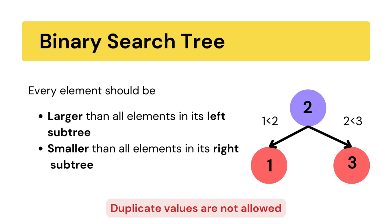Let us consider it with an example. This is a binary search tree where 2 is the head. In this BST, 1, which is the left subtree of 2, is smaller than it. And 3, which is the right subtree of 2, is greater than it. In BST, duplicate values are not allowed.